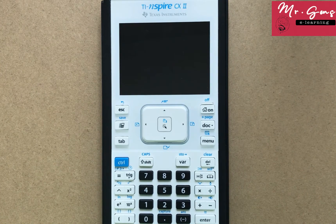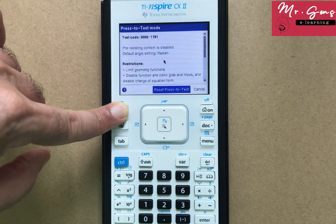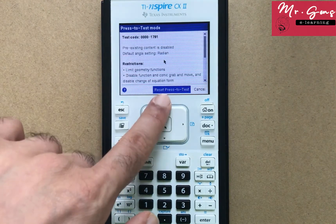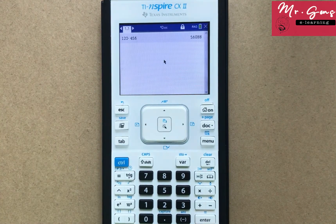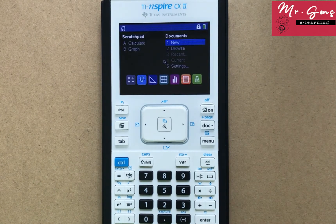You can also use the same method to reset press-to-test. When your calculator is off, hold escape and turn it on. Then you will see reset press-to-test. Press enter, so it will be reset. You are supposed to do it before and after each test.